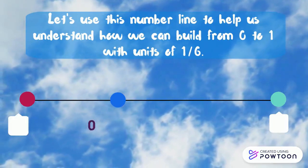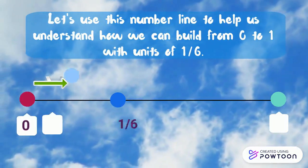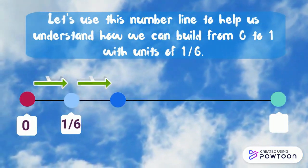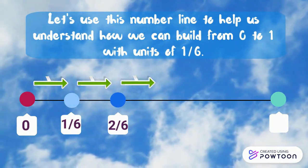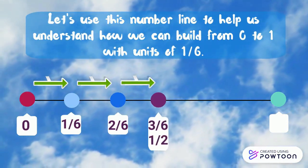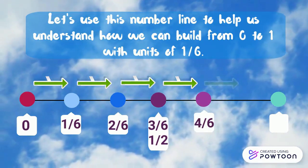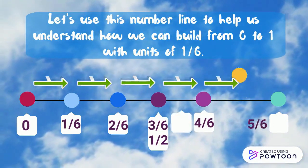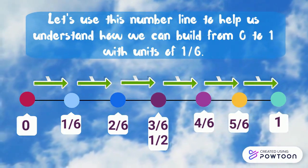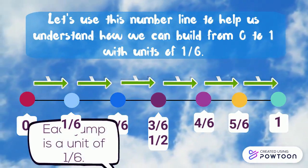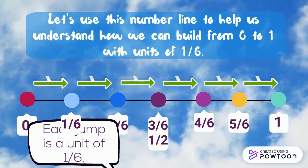Let's use this number line to help us understand how we can build from zero to one with units of one-sixth. Zero, one-sixth, two-sixths, three-sixths — equal to one-half — four-sixths, five-sixths, one.